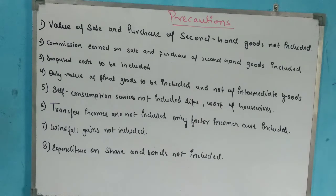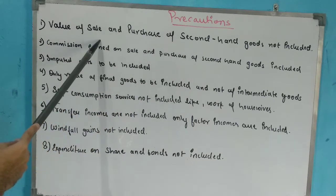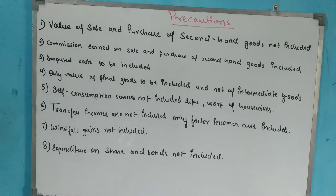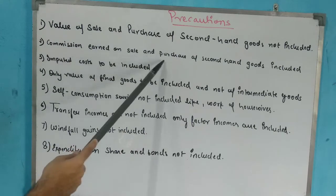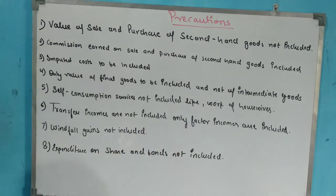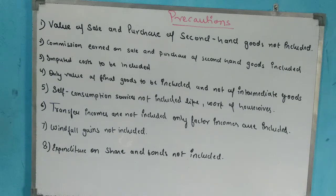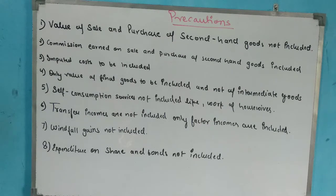Second-hand goods are excluded because their value was already included when they were first sold. Including them again would create double counting and give an incorrect national income figure. However, any commission earned on the sale or purchase of second-hand goods must be included, as it is a new income generated for the first time in the economy.